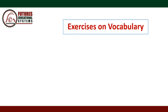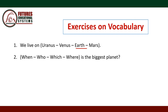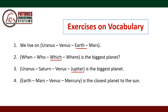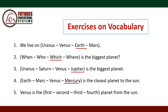Exercises on vocabulary. Number 1: We live on — Venus, Earth, Mars? Of course, we live on Earth. Number 2: Which is the biggest planet? We ask about choice using 'which.' Number 3: Jupiter is the biggest planet. Number 4: Mercury is the closest planet to the Sun. Number 5: Venus is the second planet from the Sun.